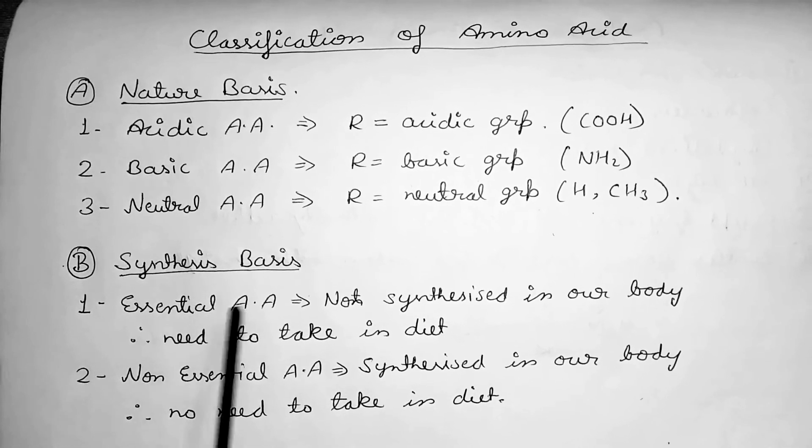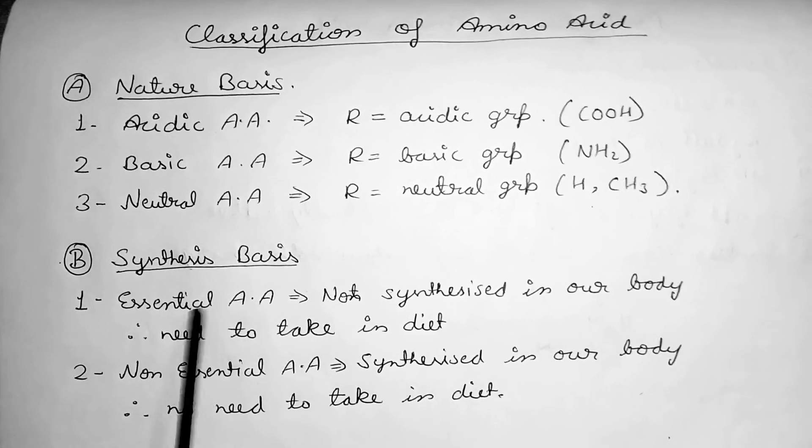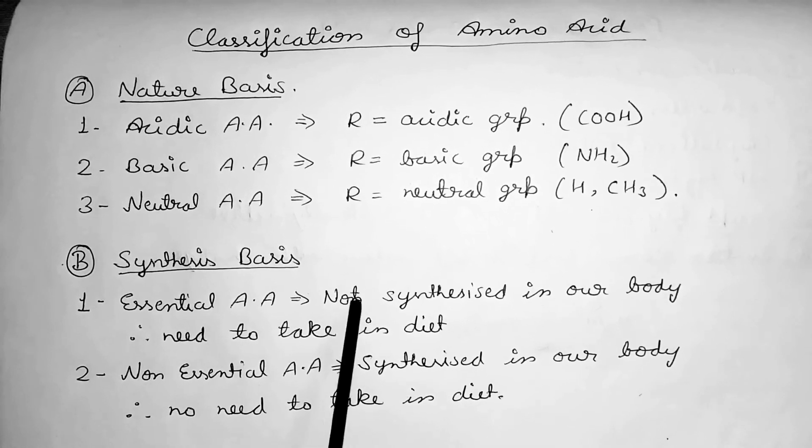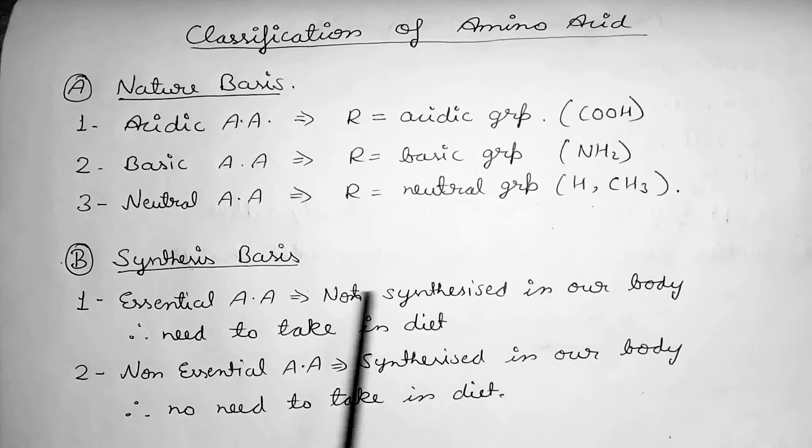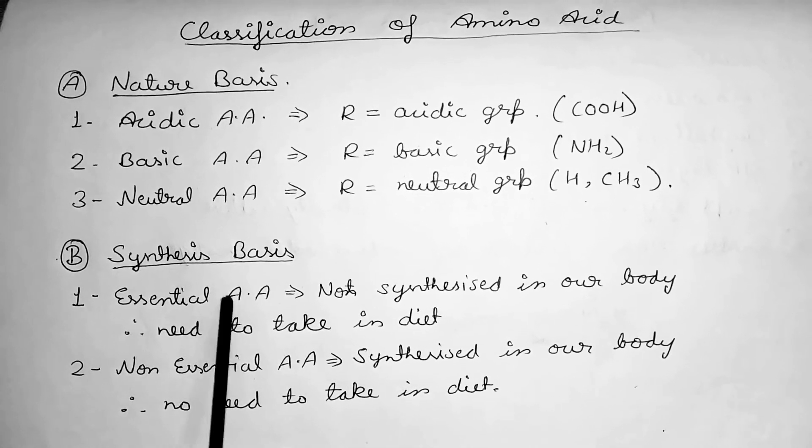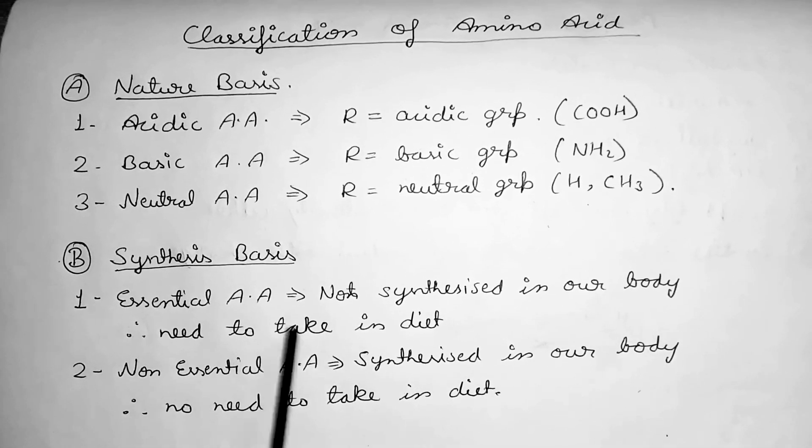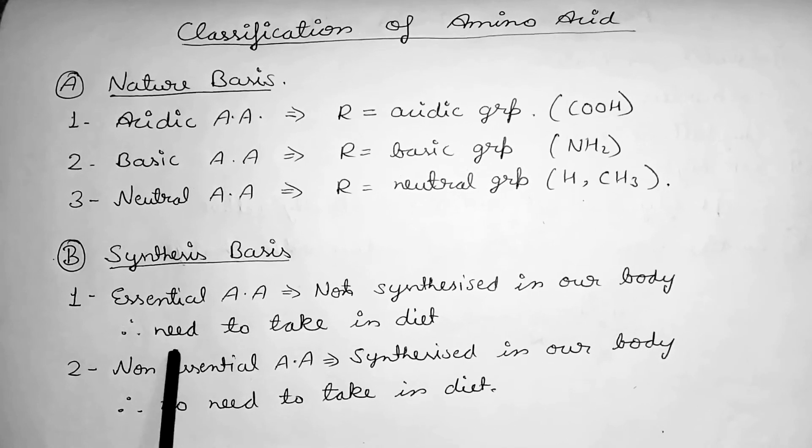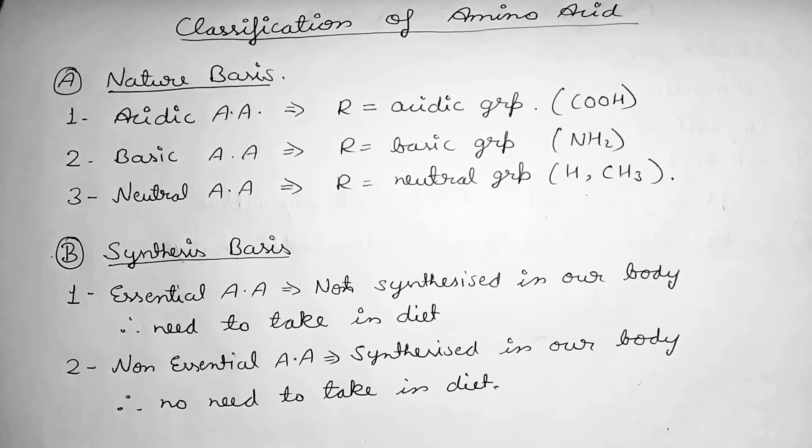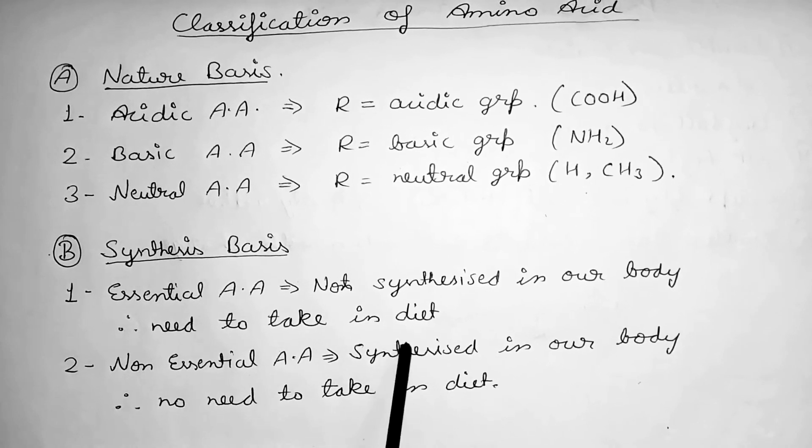two types: essential amino acid and non-essential amino acid. Essential amino acid is not synthesized in our body, so we have to take it from our diet. And non-essential amino acid is synthesized in our